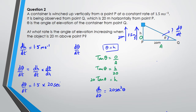We don't have θ directly — we need to find it when h is 20 meters above the point. Since PQ is 20 meters and the container is 20 meters above, we're dealing with an isosceles triangle, which means θ equals 45 degrees.